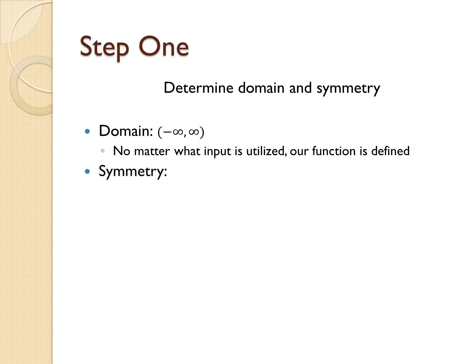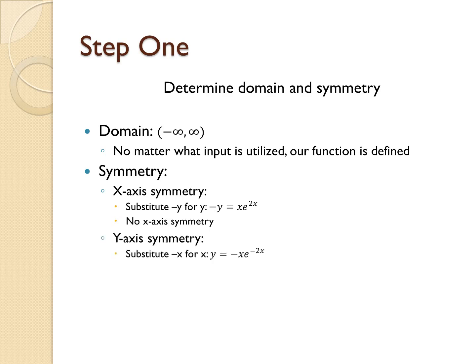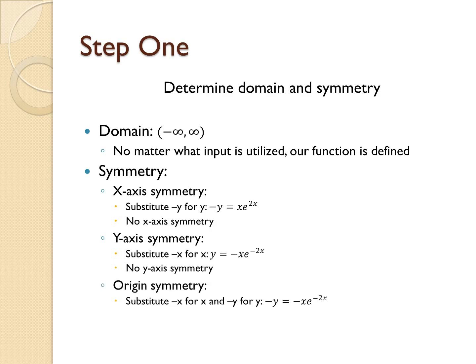Now let's discuss symmetry. For x-axis symmetry, we substitute negative y for y in our function — we can never get back to our original function xe^(2x), so we do not have x-axis symmetry. For y-axis symmetry, we substitute negative x for x — again, nothing gets us back to the original function, so no y-axis symmetry. Finally, for origin symmetry, we substitute negative x and negative y for x and y respectively — there is nothing we can do to get back to the original function. So we do not have any symmetry for this graph.